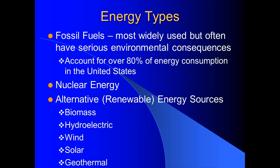Then we're going to talk about nuclear in the second half of this discussion. We'll also look at our renewable energy sources. The order of that list is important — I have them listed from the most widely used renewable energy source, which is biomass, down to geothermal, which is the fifth most widely used. So in decreasing order of use in the U.S.: biomass, hydroelectric, wind, solar, and then geothermal.